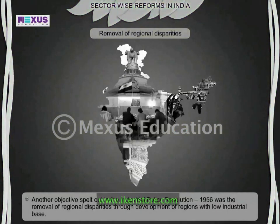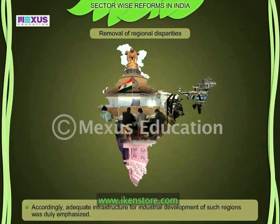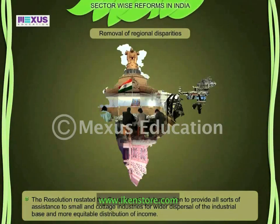Another objective of the Industrial Policy Resolution 1956 was the removal of regional disparities through development of regions with a low industrial base. Accordingly, adequate infrastructure for industrial development of such regions was duly emphasized. Given the potential to provide large-scale employment, the resolution restated the government's determination to provide all sorts of assistance to small and cottage industries for wider dispersal of the industrial base and more equitable distribution of income.